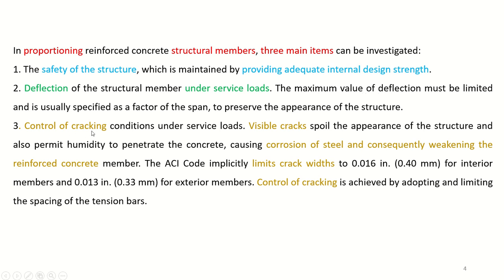Number three: control of cracking conditions under service loads. This is very important because visible cracks spoil the appearance of the structure and also permit humidity to penetrate the concrete, causing corrosion of steel and consequently weakening the RC member. The ACI code implicitly limits crack width to 0.016 inch for interior members and 0.013 inch for exterior members. Control of cracking is achieved by limiting the spacing of the tension bars.